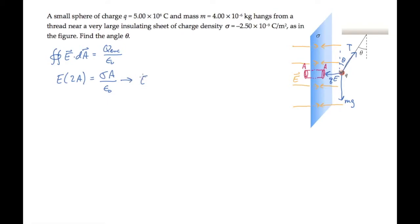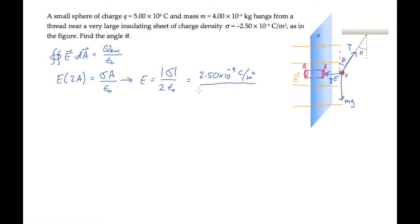We can solve this for the electric field, take its magnitude, and substitute numbers to find that the electric field magnitude from the insulating sheet is 141 newtons per coulomb.